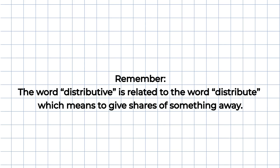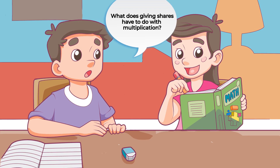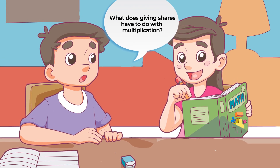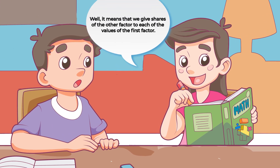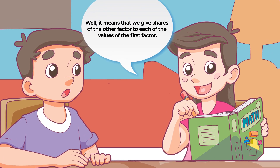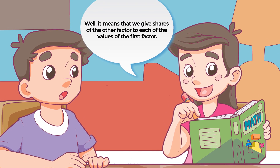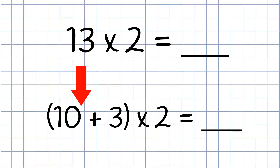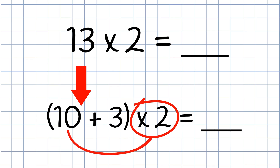Remember, the word distributive is related to the word distribute, which means to give shares of something away. What does giving shares have to do with multiplication? Well, it means that we give shares of the other factor to each of the values of the first factor. In this problem, we will multiply 2 to both 10 and 3.